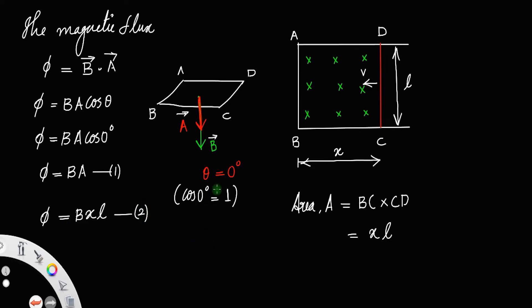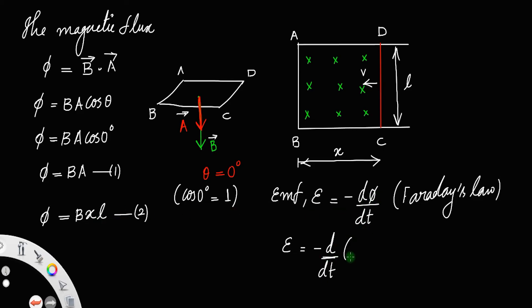Now we have the EMF. According to Faraday's law, we have EMF equal to minus d phi by dt. The derivative of magnetic flux linked with the coil with respect to time will give the EMF. This is Faraday's law. Now we have E equal to minus d by dt of, instead of phi, we can substitute BxL.